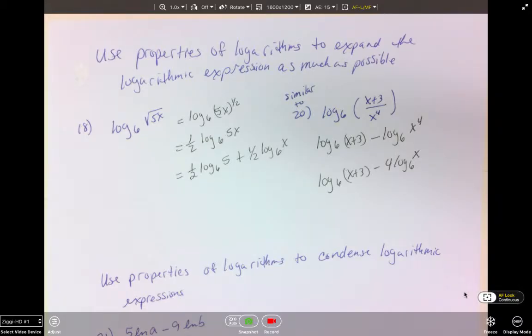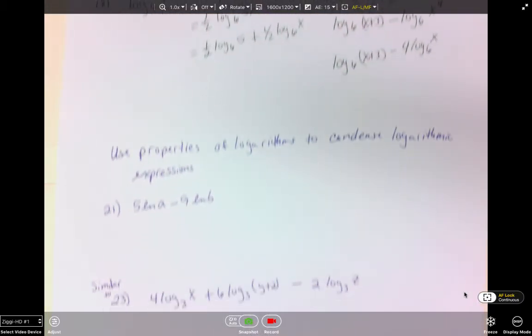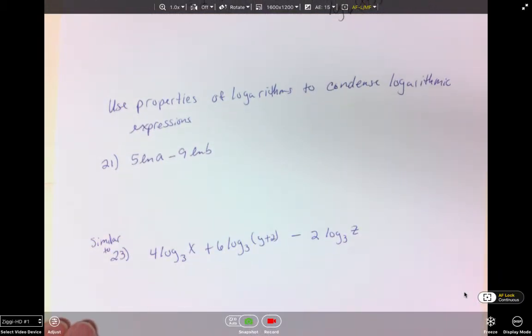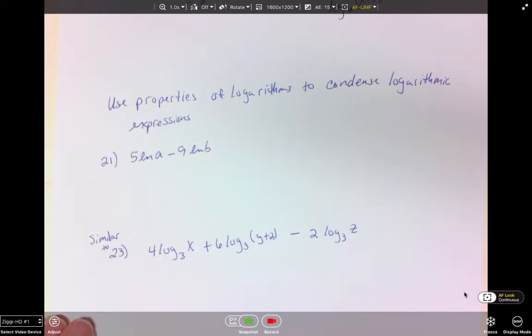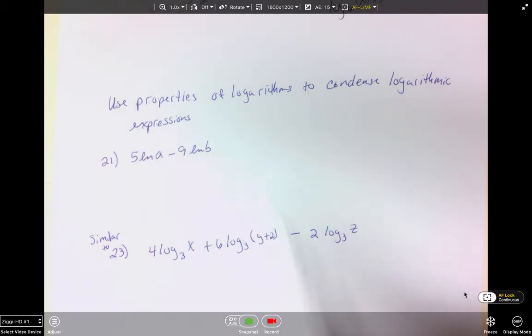So now we're going to look at condensing logarithmic expressions. Our first problem that we're looking at is 5 natural log a minus 9 natural log b. To work this problem, basically we're going to take the number out front and turn it back into our exponents.